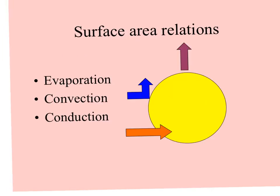Here's a place where physics interacts with biology in surface area relations. The bigger the organism, the lower the surface-to-volume ratio. Small organisms have a lot more surface compared to their volume. So if this sphere is an organism, evaporation is heat or moisture leaving the organism, convection is heat bouncing off, and conduction is where heat is absorbed and passes through, transferred to another body.